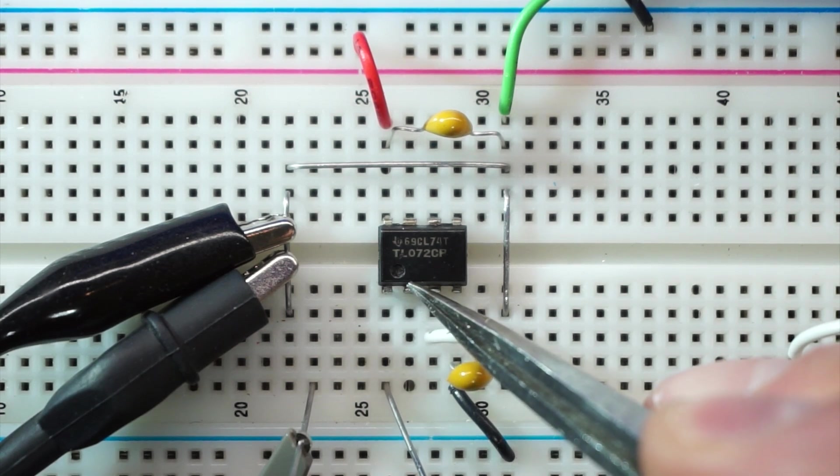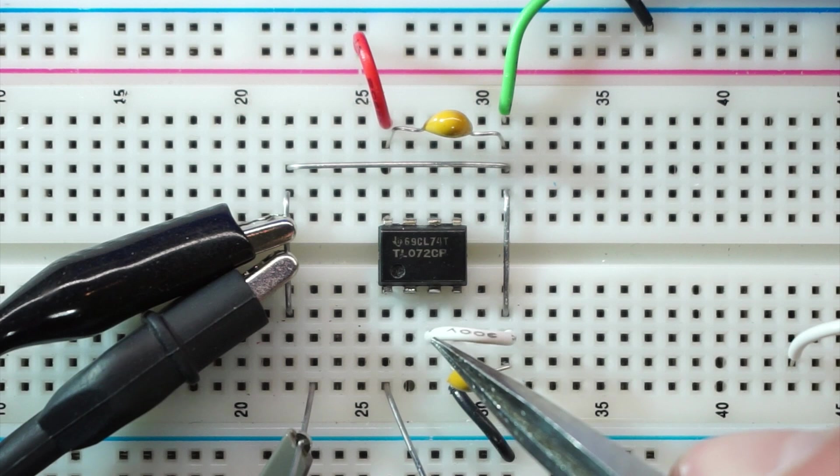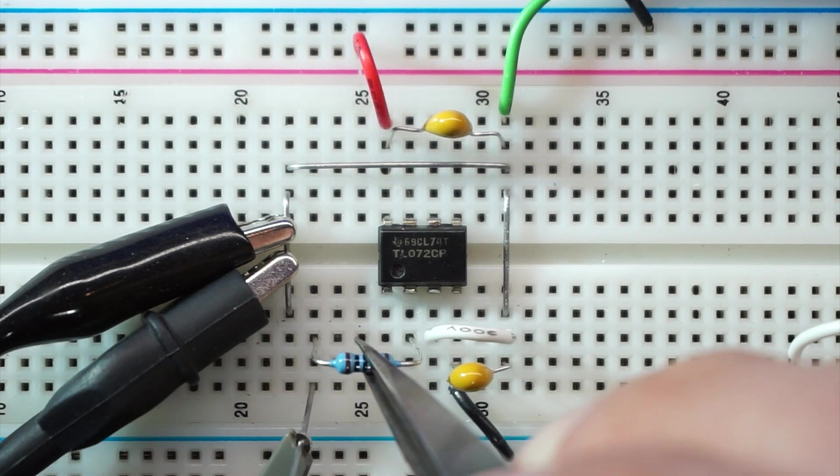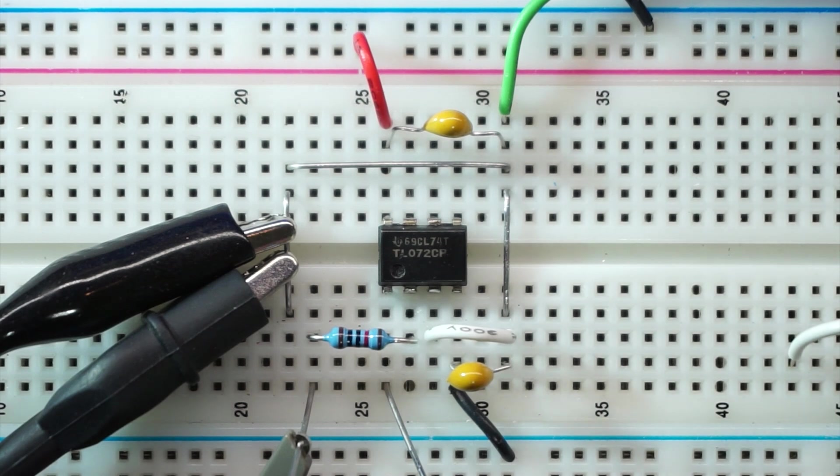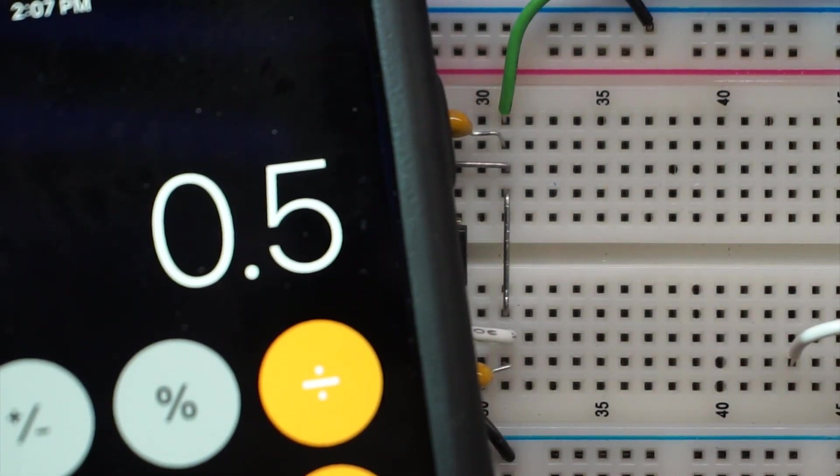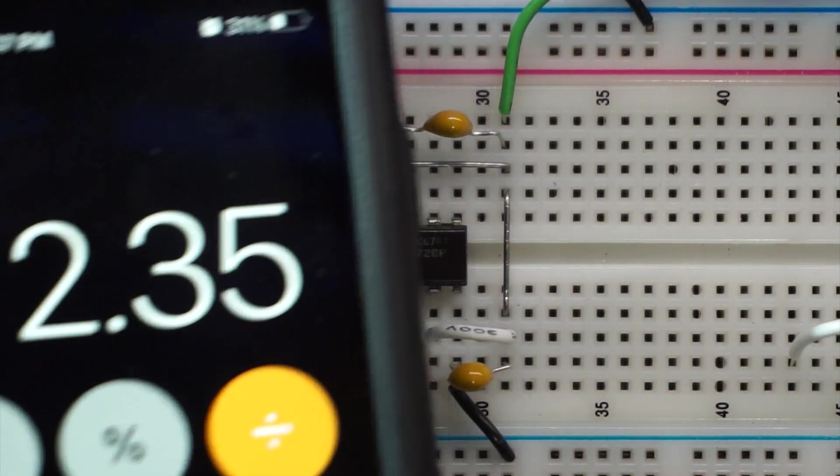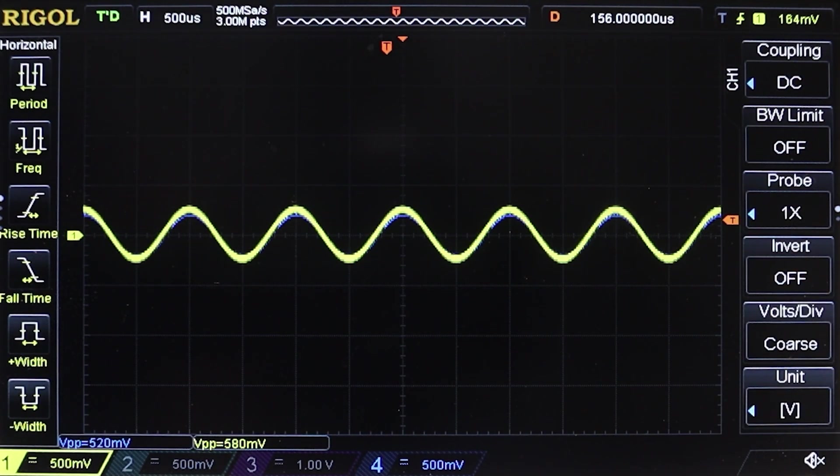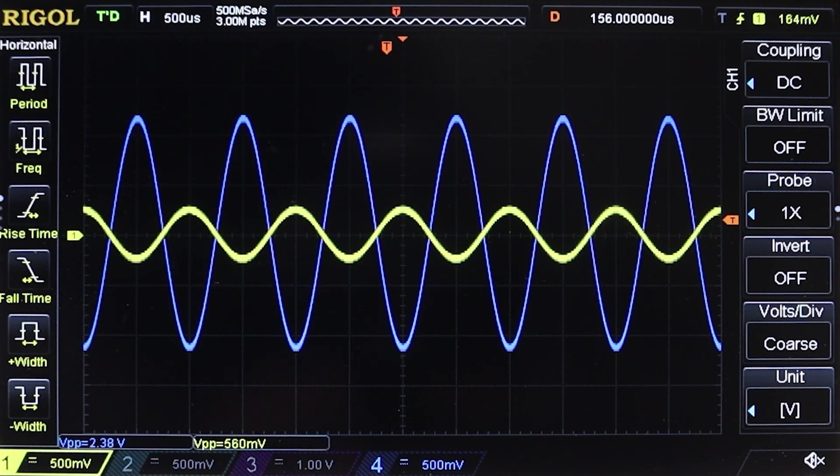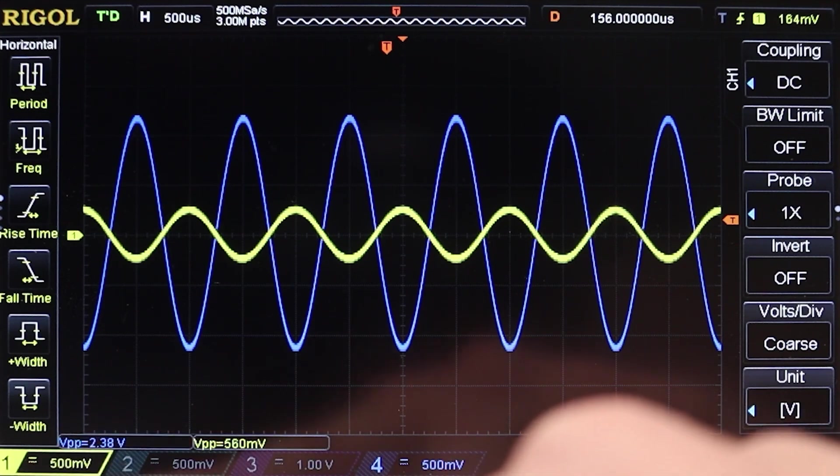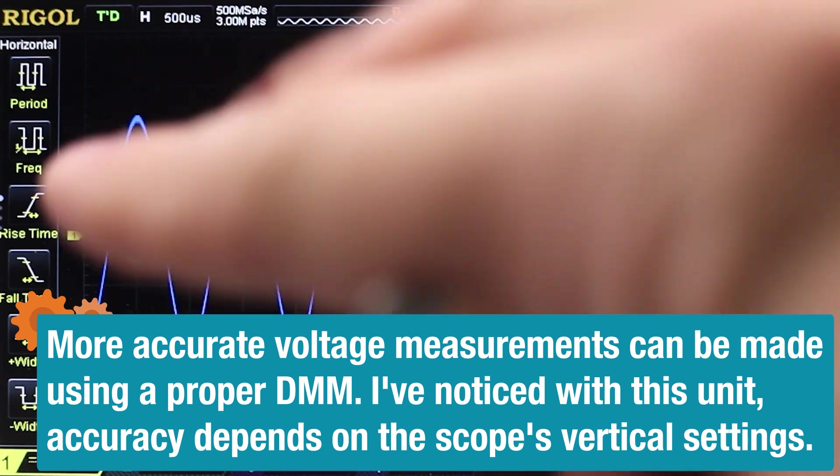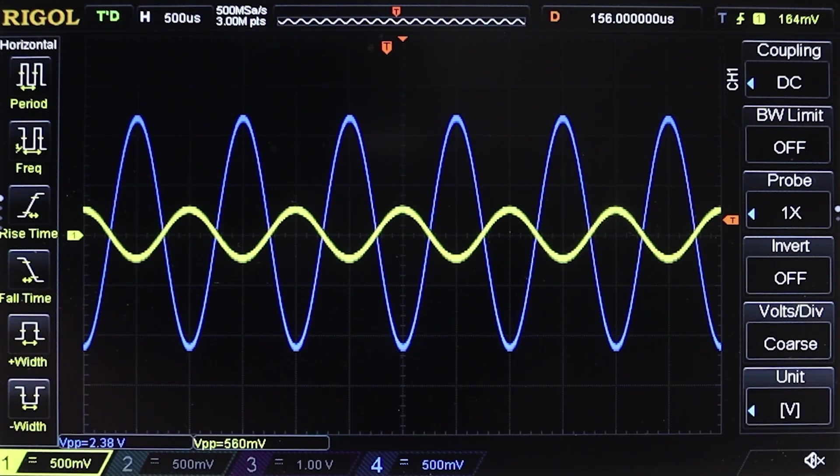Pin 1 is the output, pin 2 is the inverting input, pin 3 is non-inverting. The non-inverting input is connected to ground. I'm using a 10k resistor for my input and a 47k feedback resistor, so my gain is 4.7. With half a volt in, 0.5 times 4.7, my output should be 2.35 volts. At the scope, we're measuring 2.38 volts, and the phase is 180 degrees out of phase with the input.